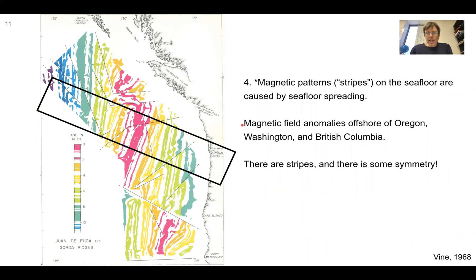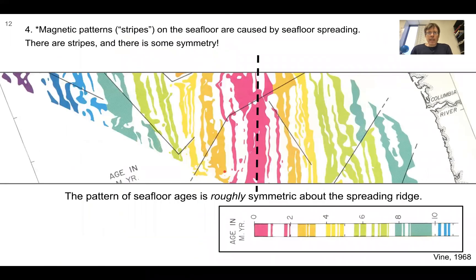This map shows the magnetic field anomalies offshore of Oregon, Washington, the Columbia River, and British Columbia — this is Vancouver Island. This dataset from 1968 is something we'll look at in the next talk. We can see a highly systematic pattern: looking at a box in this area, there is symmetry along this red line — you can see reds, oranges, light greens, dark greens — a repeating pattern. It's not perfect, but it's systematic enough that it really warrants an explanation.